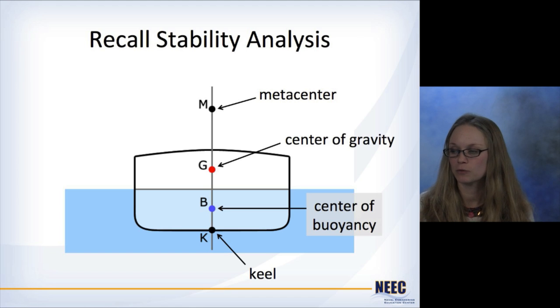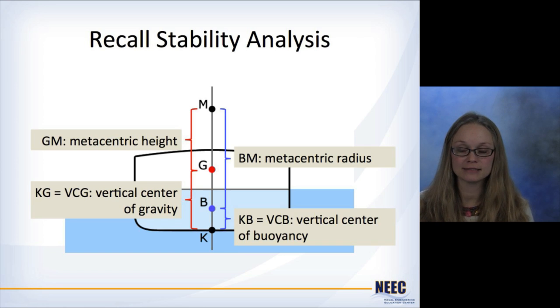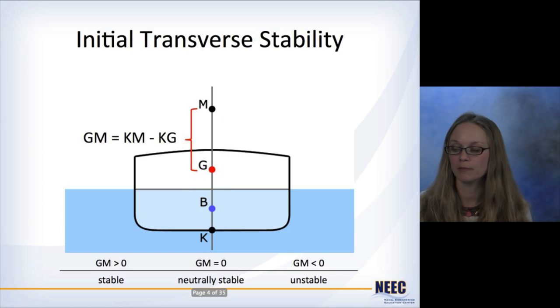So for initial stability analysis, we have these four main points: the metacenter, the center of gravity, the center of buoyancy, and the keel. These give us various lengths that we need for our stability analysis, the most important one being GM, the metacentric height. For initial transverse stability, we've got GM equals KM minus KG. Not a very difficult calculation, right?